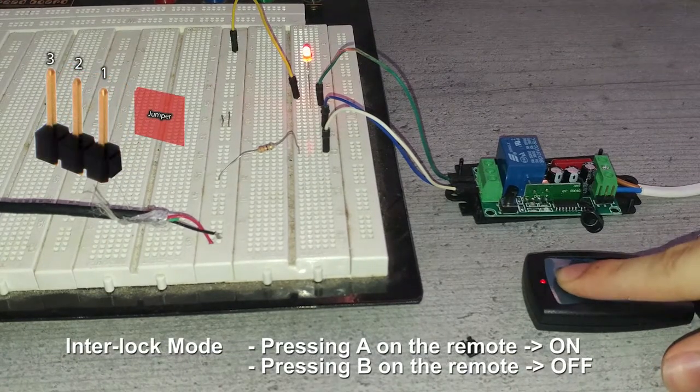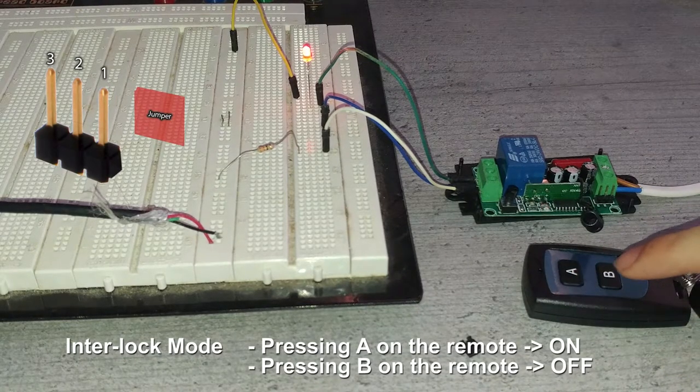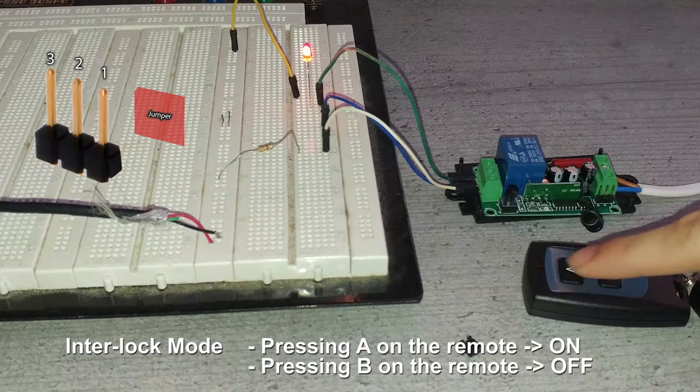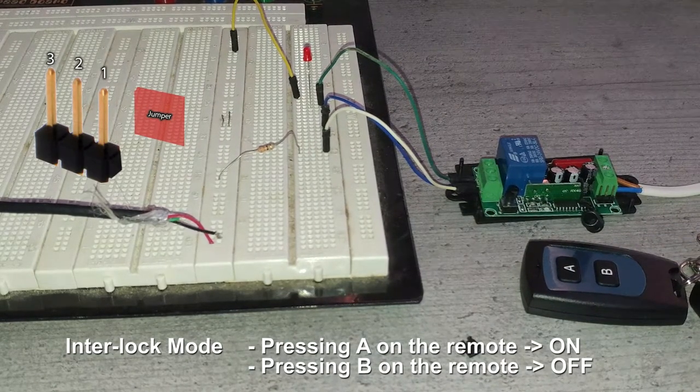Finally we have the interlock mode which uses two buttons. One to set the LED to on and the other one to set the LED to off. This mode needs the two buttons on the remote control.